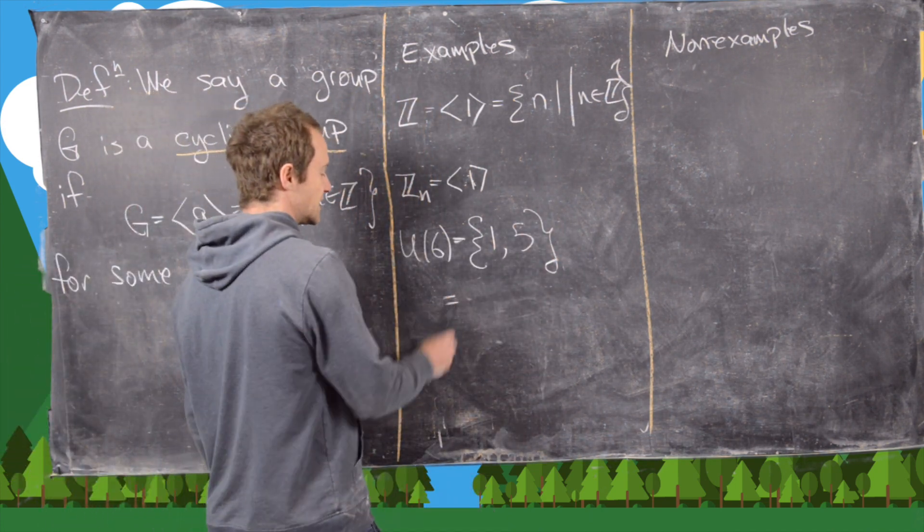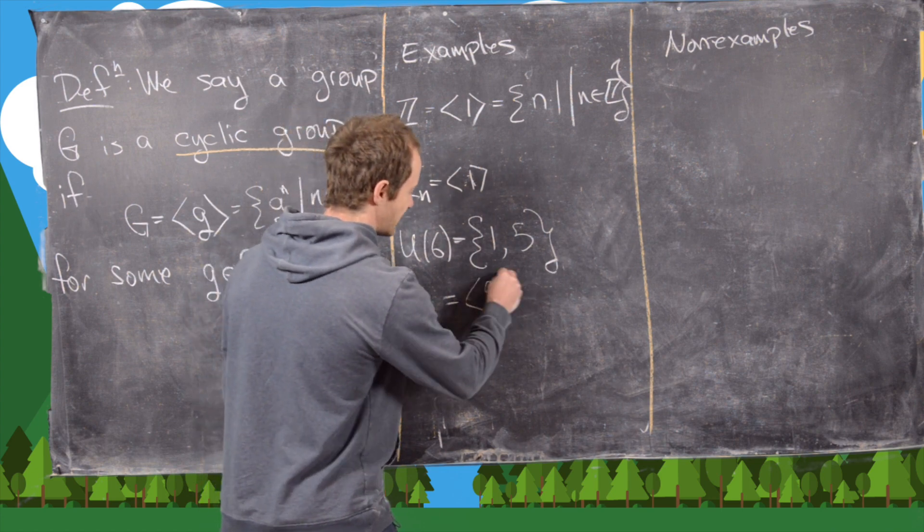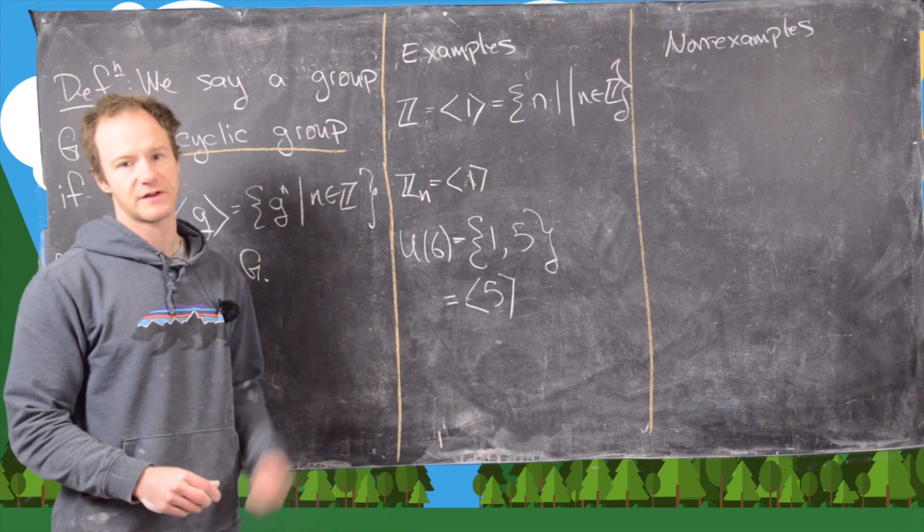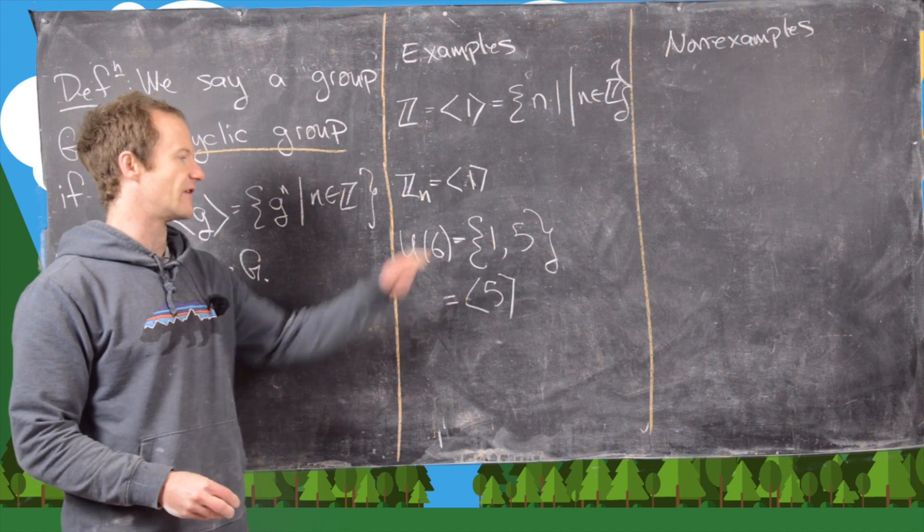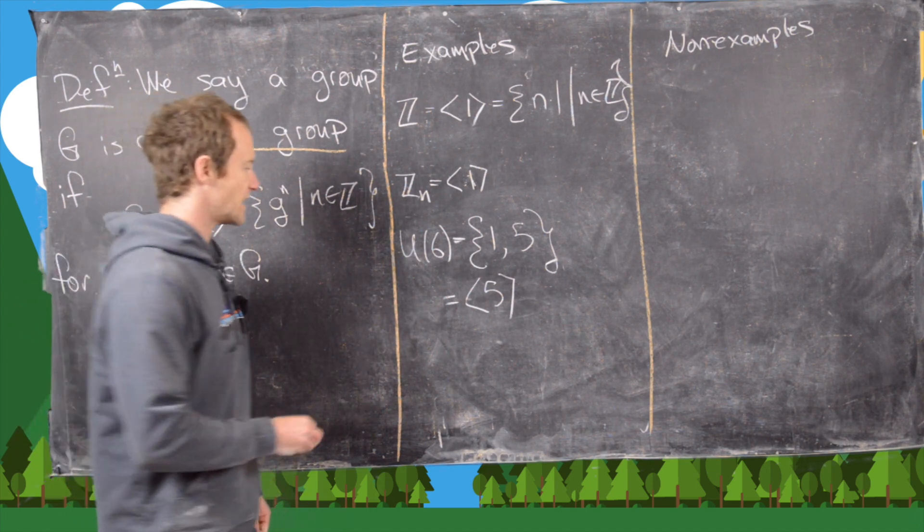Now notice this is clearly cyclic. It's generated by five because we have five to the first power is five, and five squared is 25 which is one.